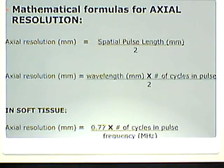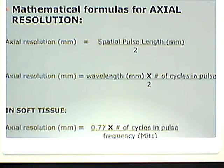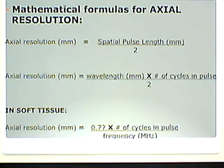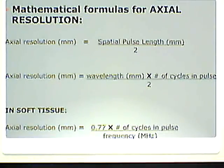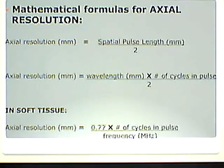Specifically in soft tissue, axial resolution becomes 0.77 millimeters times the number of cycles in the pulse, divided by the frequency. I want you to recognize that formula. I'll ask what the formula is for axial resolution in soft tissue, and for the other formulas I'll have you do some simple math. If you understand the concept and grasp it, you'll be fine.